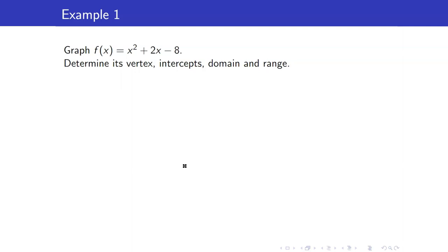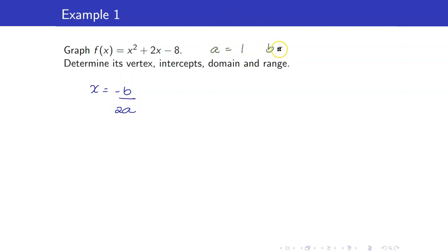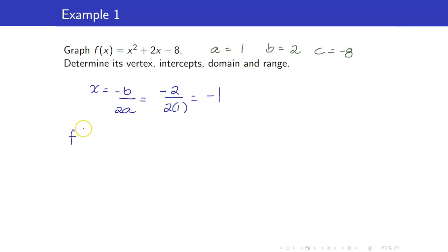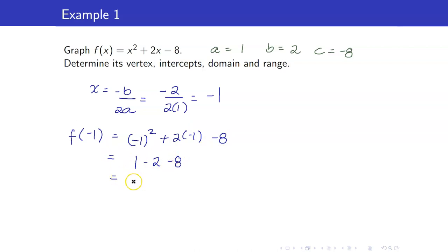Let us determine its vertex, intercepts, domain, and range. First, I'll compute the vertex using negative b over 2a. In our quadratic function, a is 1, b is 2, and c is negative 8. So negative b over 2a is negative 2 over 2 times 1, which equals negative 1. Then f of negative 1 is negative 1 squared plus 2 times negative 1 minus 8, which is 1 minus 2 minus 8, equal to negative 9. So our vertex is (negative 1, negative 9).